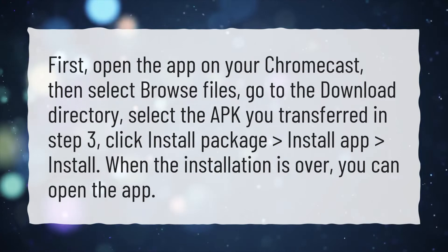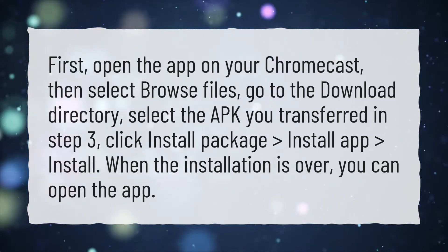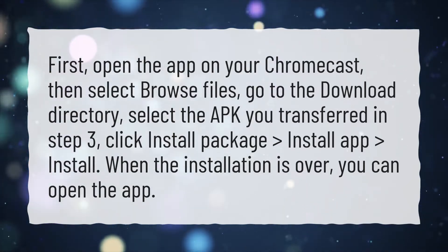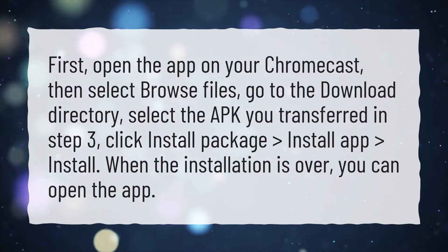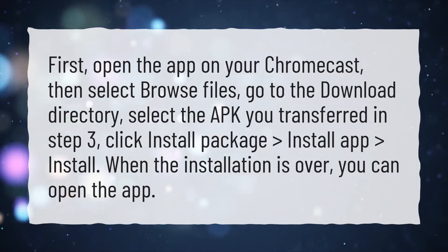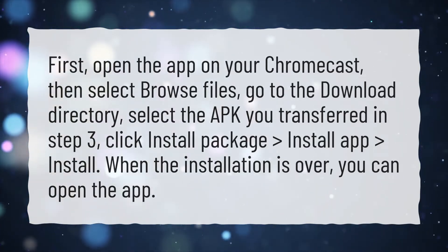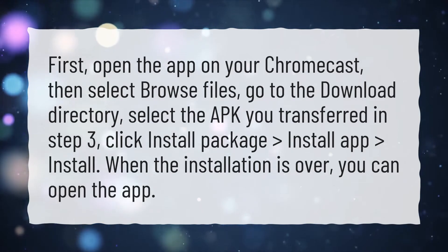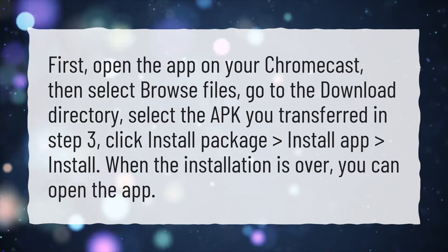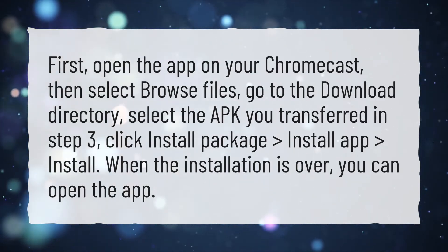First, open the app on your Chromecast, then select Browse Files. Go to the download directory, select the APK you transferred in Step 3, click Install Package, then Install App, and Install. When the installation is over, you can open the app.